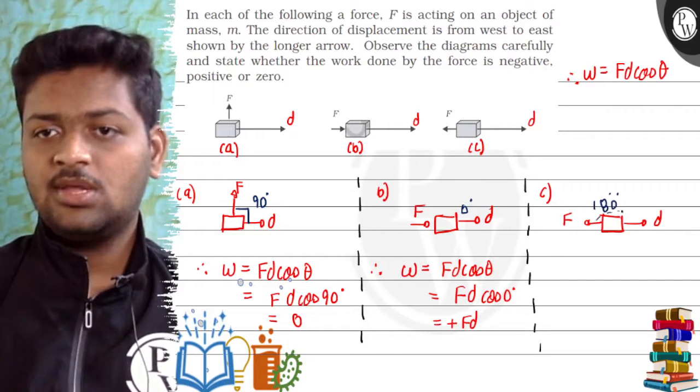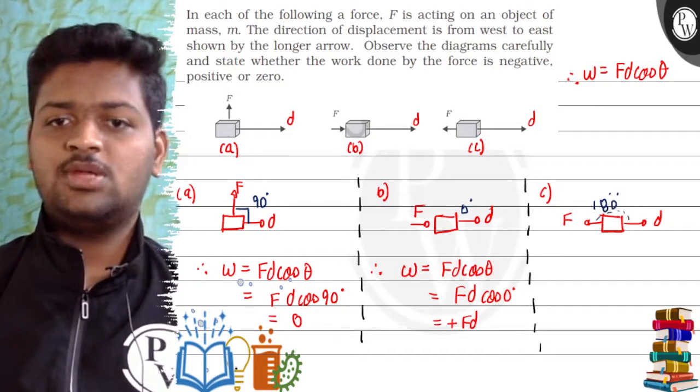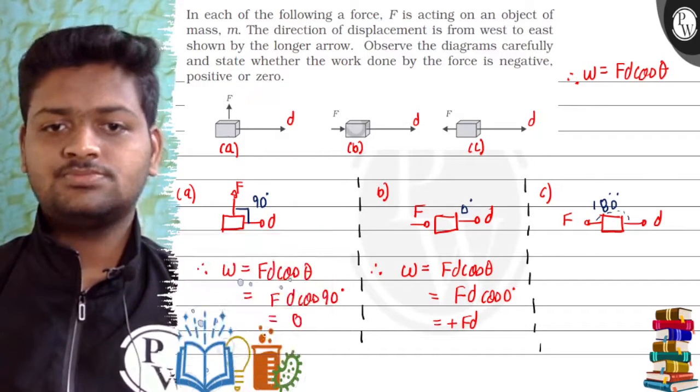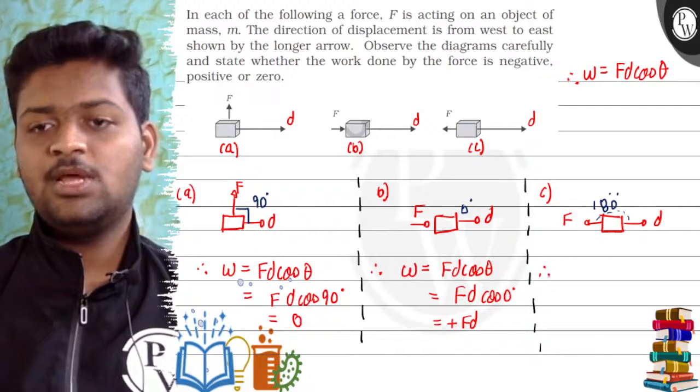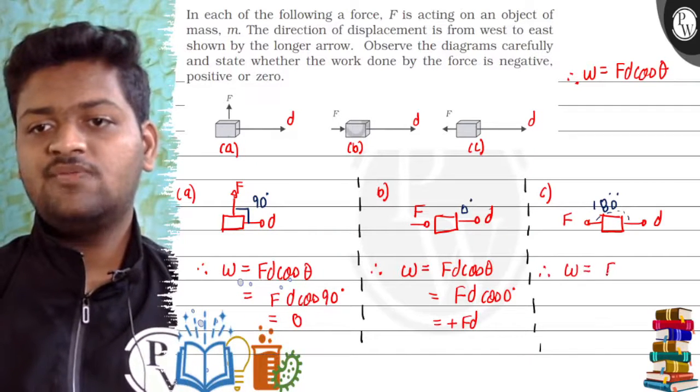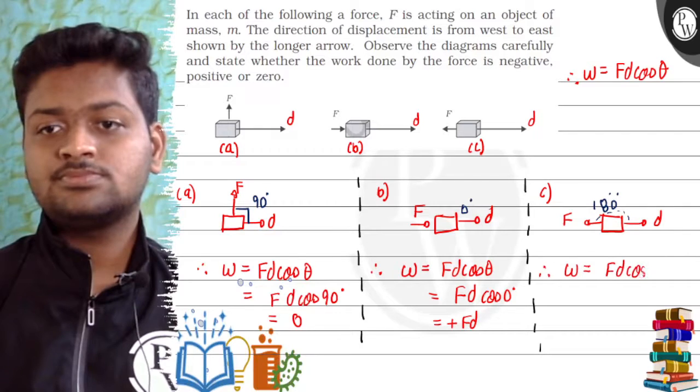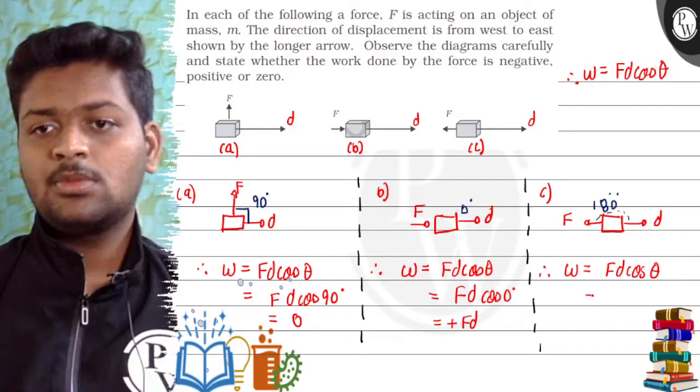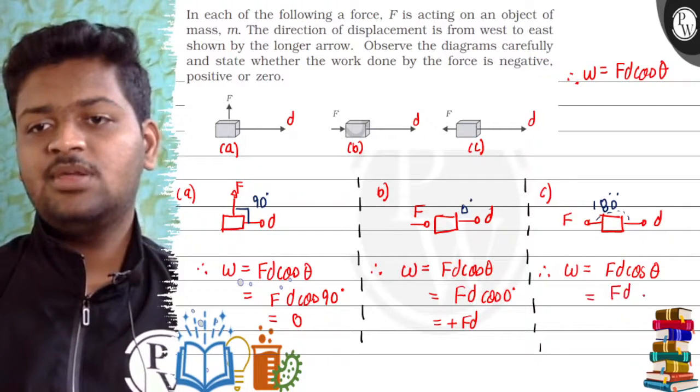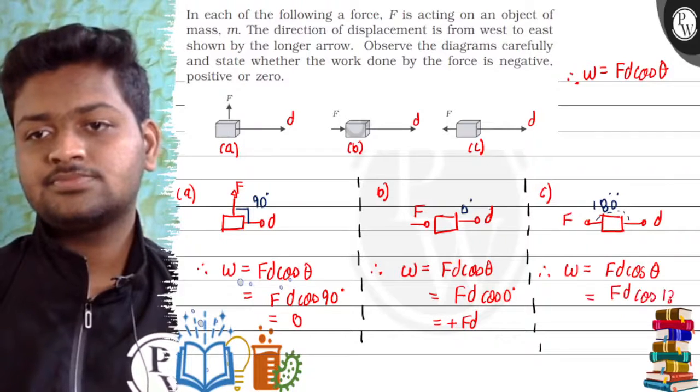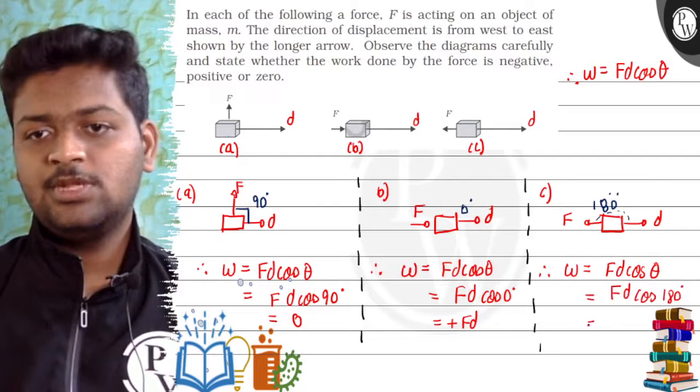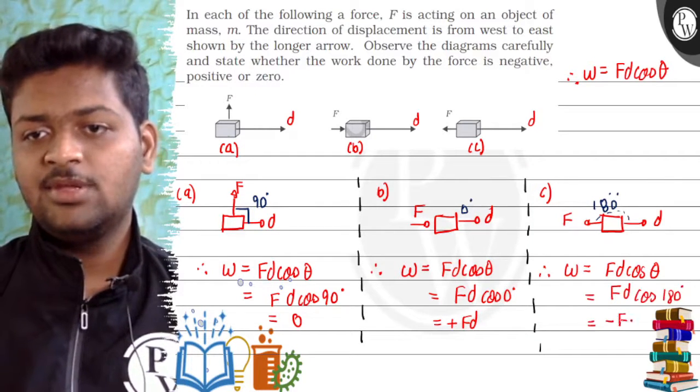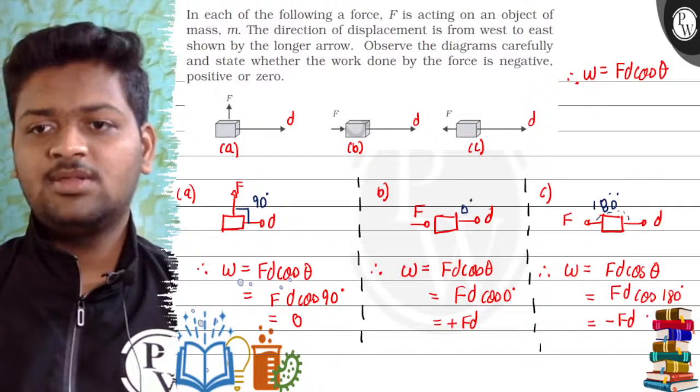You can check here the angle is 180. They are in opposite directions. Now again, we know the formula work is equal to Fd cos theta. Again it will be Fd cos 180 degrees. That will be equal to minus Fd because cos 180 degrees is minus 1.